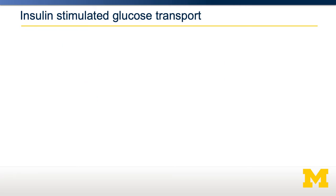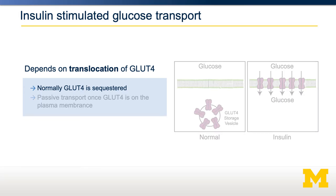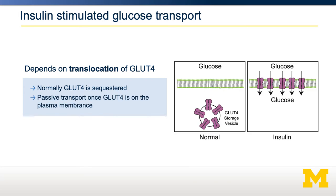If we look at this at a molecular level, the key transporter in this process of transport into muscle is called GLUT4. Normally, GLUT4 is sequestered on vesicles inside the cell and not on the plasma membrane. However, upon insulin stimulation, GLUT4 vesicles are trafficked to the plasma membrane where they fuse. Now that GLUT4 is on the plasma membrane, it allows glucose to go down its concentration gradient inside the cell. This occurs primarily in muscle and adipose tissue. Insulin-stimulated GLUT4 translocation is therefore critical for getting glucose into muscle and adipose tissue after a meal.